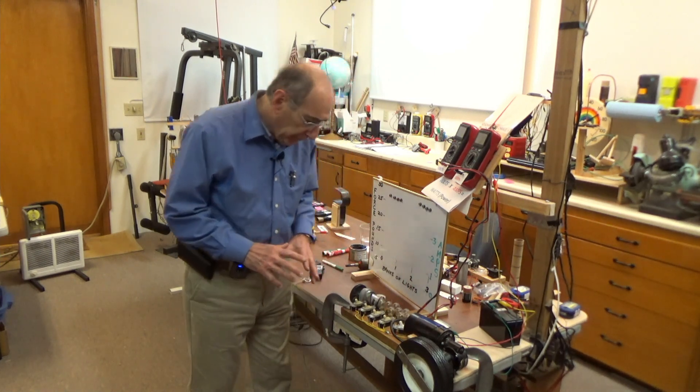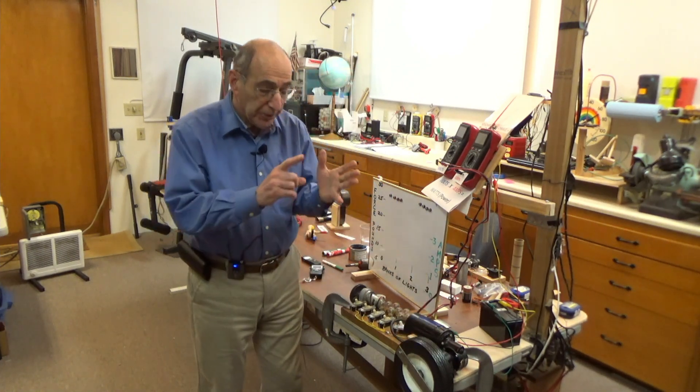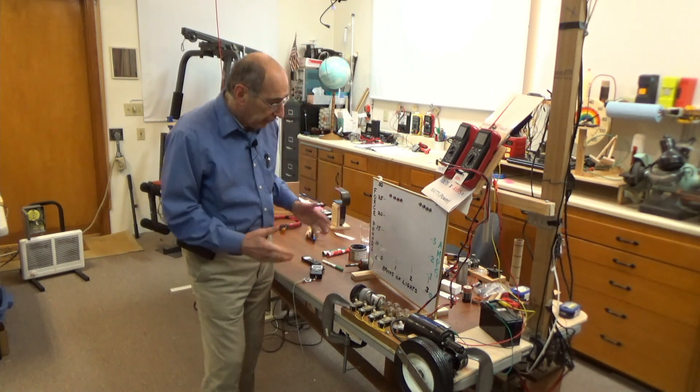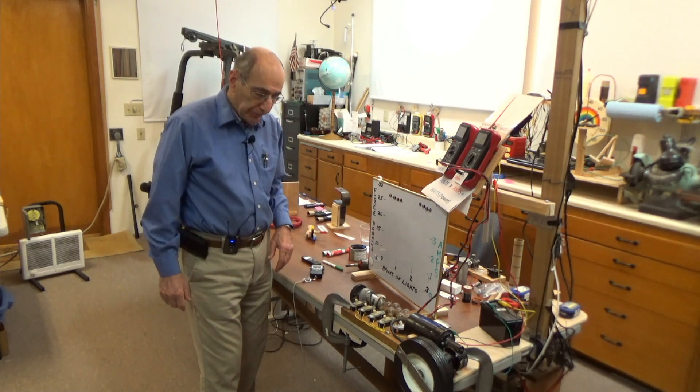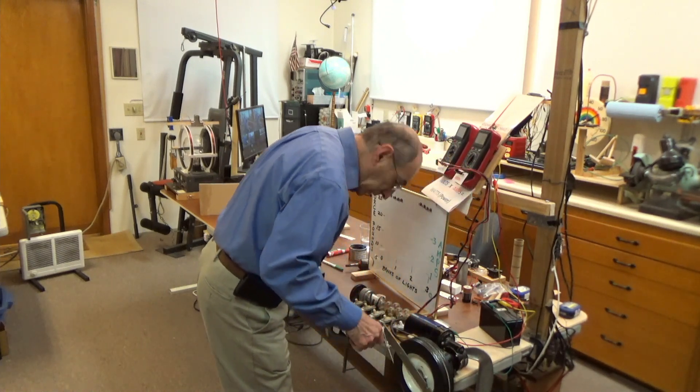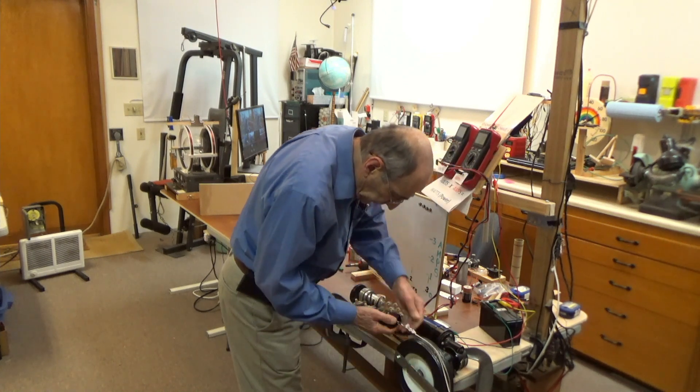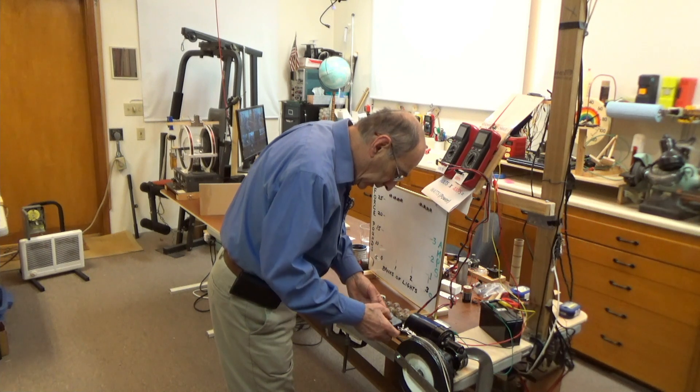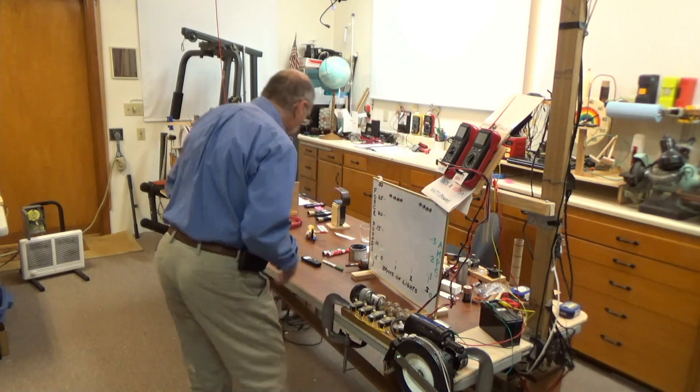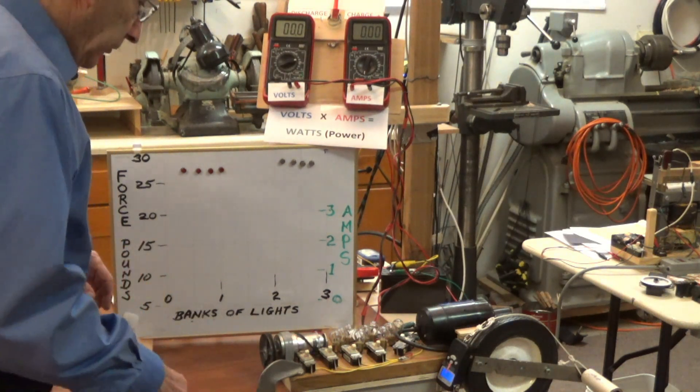So what I'm going to do is measure for you the force it takes to turn this wheel depending on whether there's any lights on at all, one bank, two banks, or three banks, and we'll graph them and get an idea of the relationships. I'm going to tie this cord on here with a digital scale, turn it on, and let's go to a different camera so you can see everything close up.